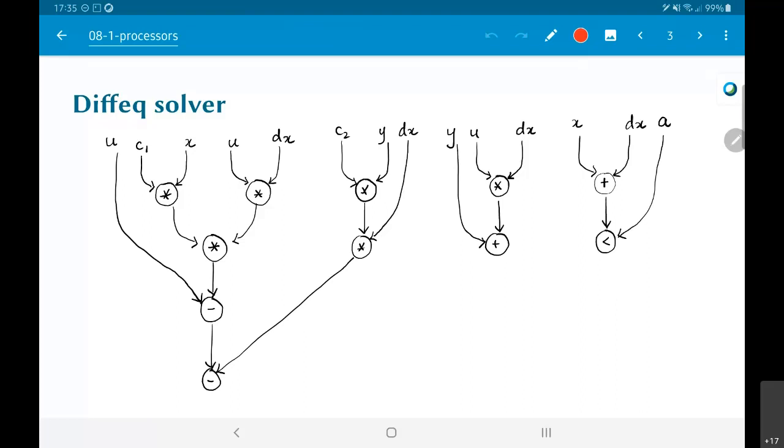All right, so this is the same task graph that we had earlier. And we have been through how we can schedule this in different ways: ASAP, ALAP, finite resources, list based scheduling, all of those we looked at.